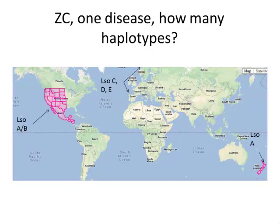As you know, with zebra chip disease we have so many bacteria haplotypes now that it's difficult to follow what's going on. We have two haplotypes in North America, haplotype A and B, one haplotype in New Zealand, and now three more haplotypes in Europe: C, D, and E.